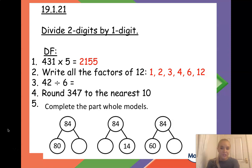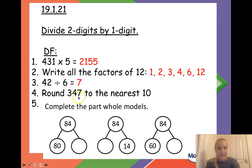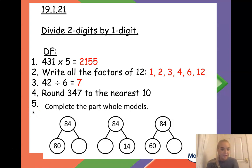Number three: 42 divided by 6. You could use your six times table to work out how many sixes are in 42 — the answer is seven. Number four: round 347 to the nearest 10. We look at the tens digit which is 4, giving us 40. Because the number is 47 we round up — five or above we round up — so we round that to 350.